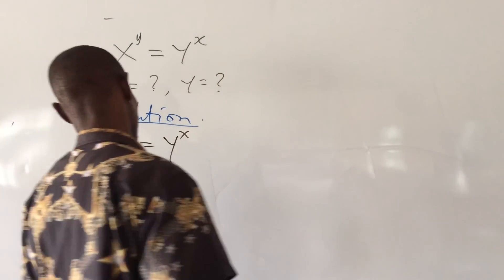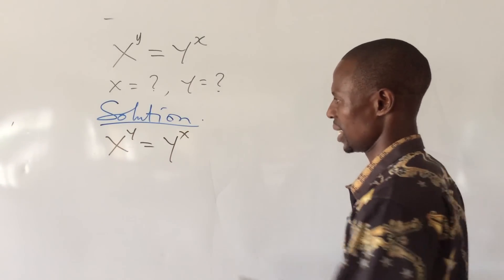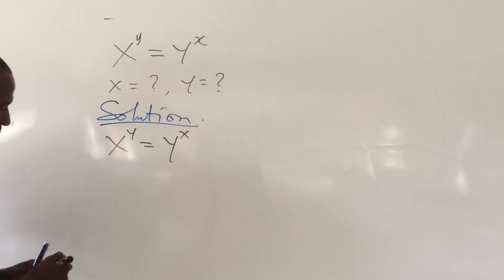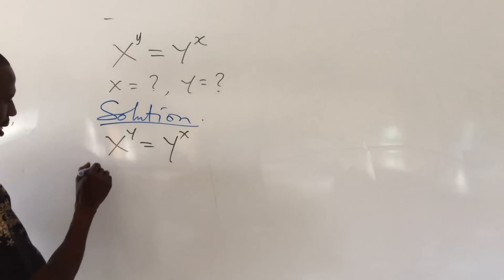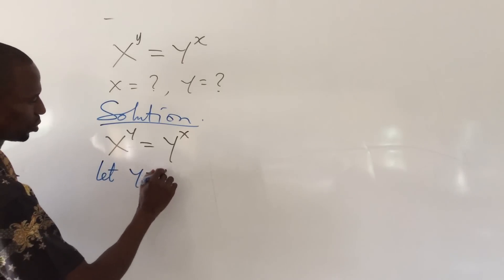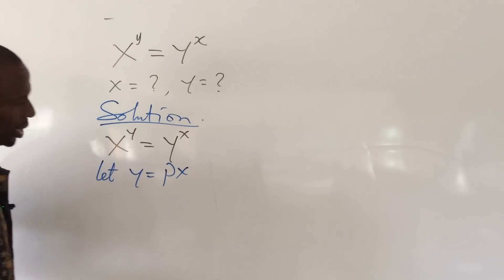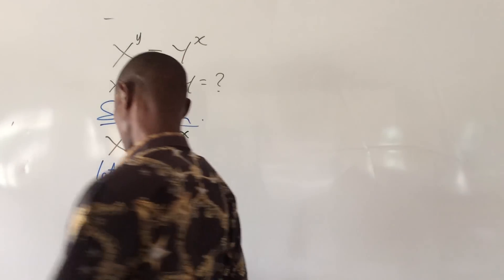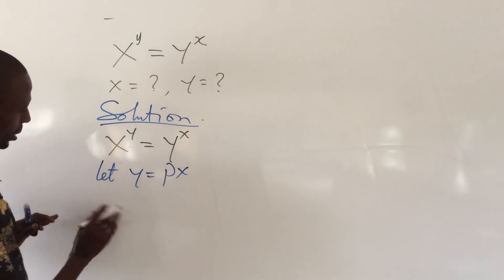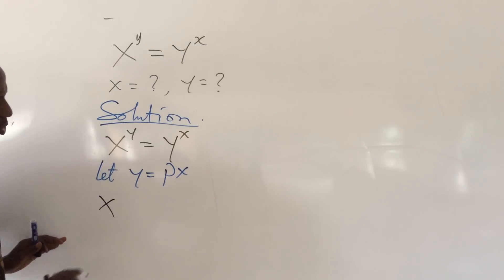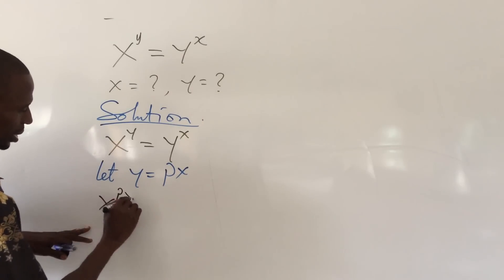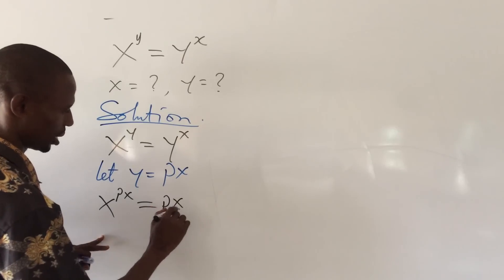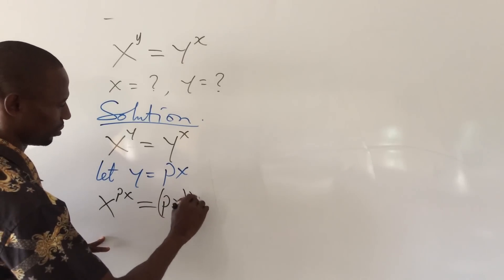From this, what if I decide to let y equal to px? So wherever we see y, we put in the value px. So with that, this will now become x to the power of px equal to px to the power of x.